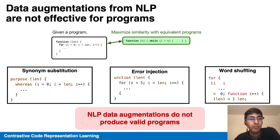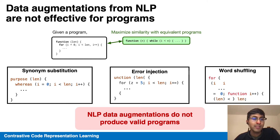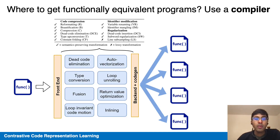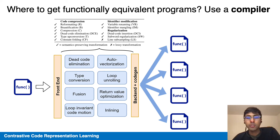If we mine equivalent pairs from the GitHub unlabeled dataset, it will be quite computationally intensive to identify them, and there actually might not be too many. That data might also be quite imbalanced based off of popular programs to implement. Using data augmentations is one approach to generate similar variants, but natural language processing data augmentations often produce invalid programs that really don't preserve the same semantics. Our key insight is to generate functionally equivalent programs quickly and scalably using source-to-source compilers.